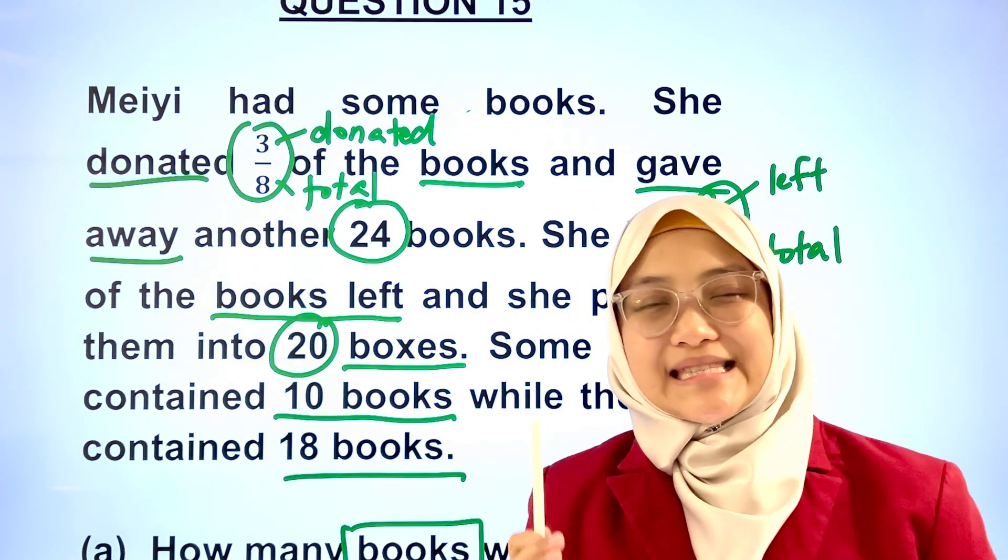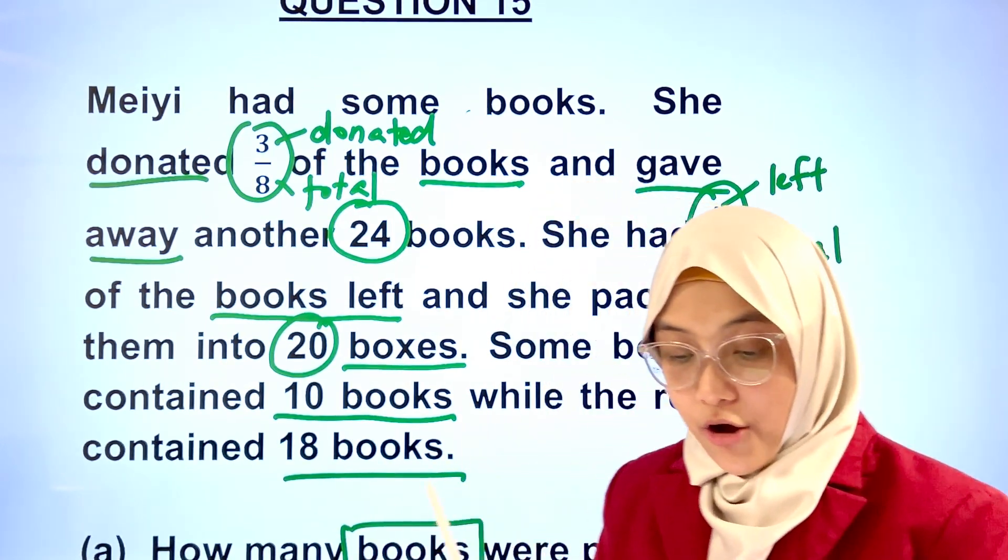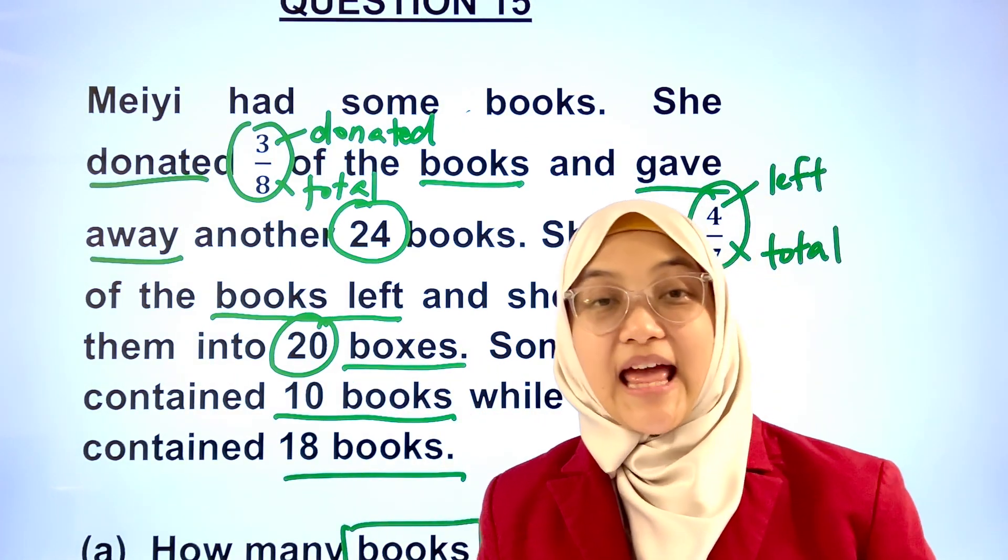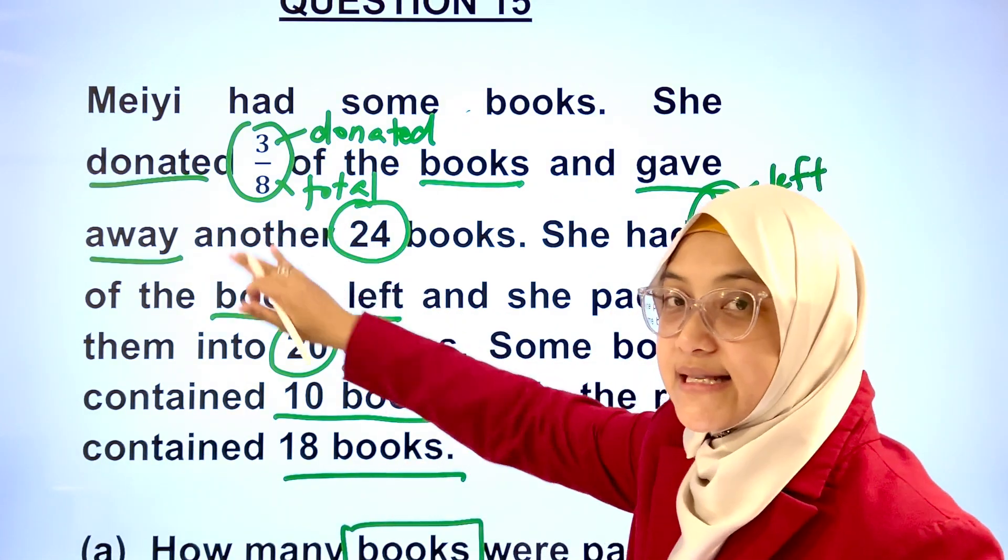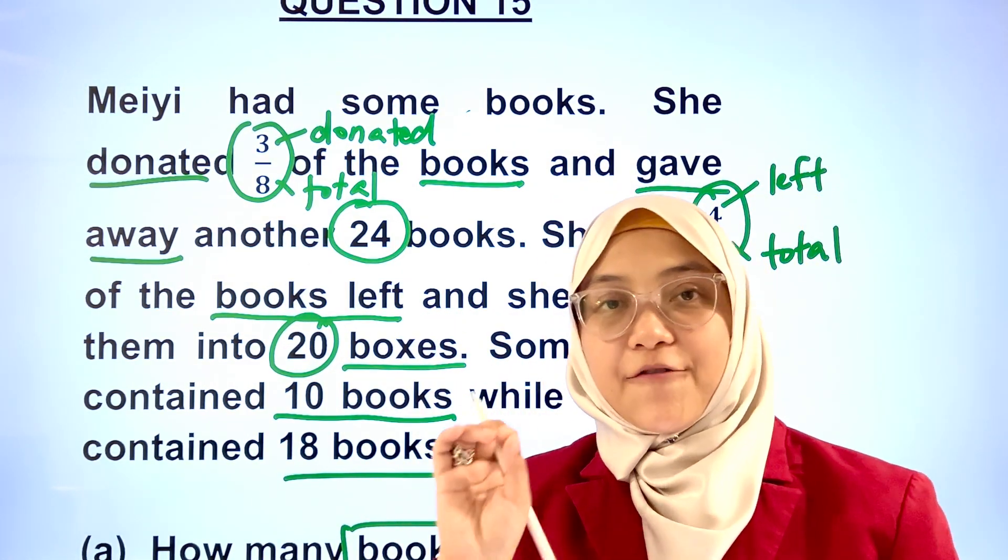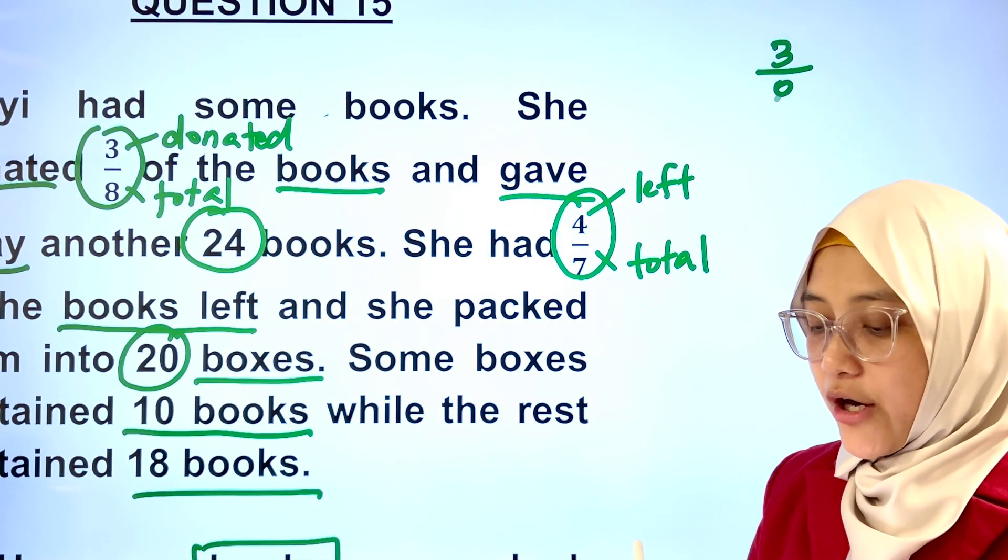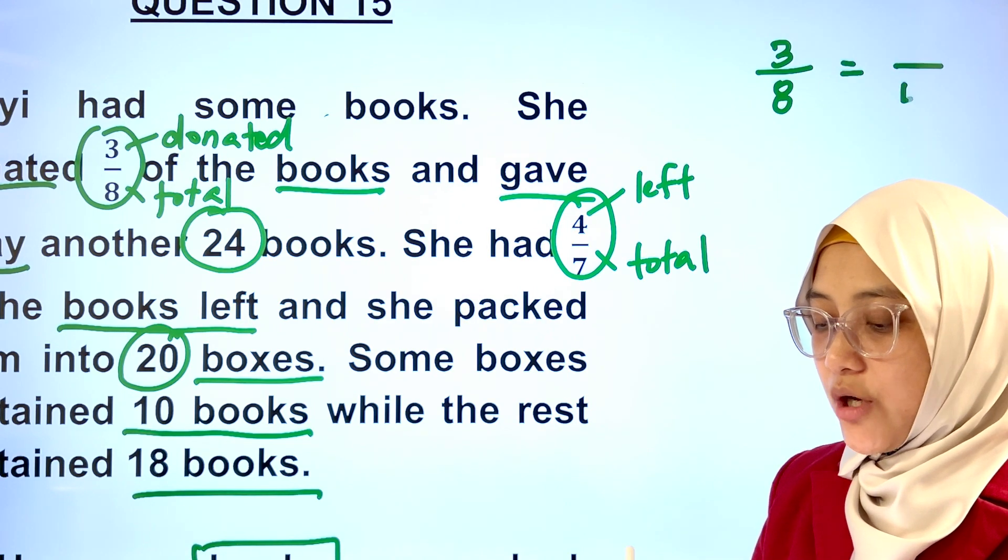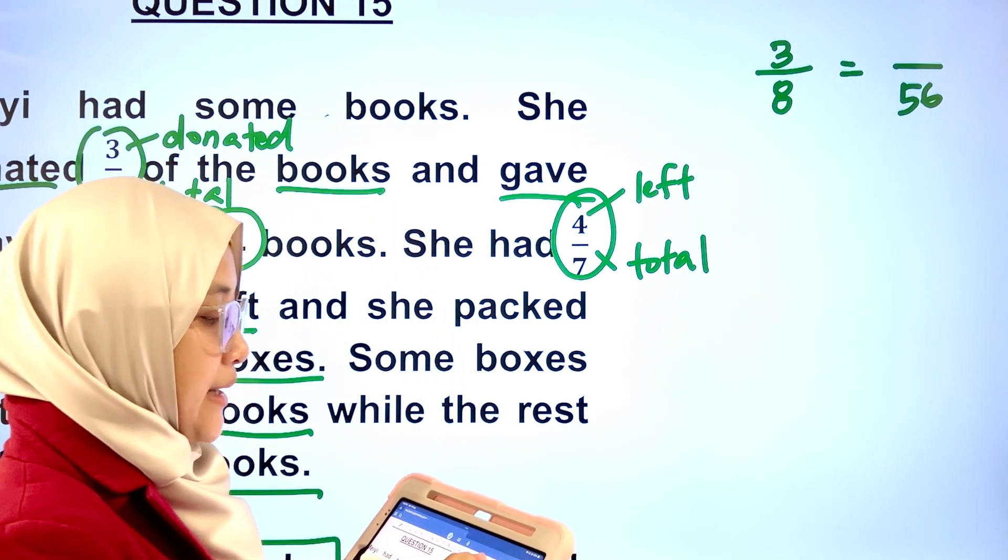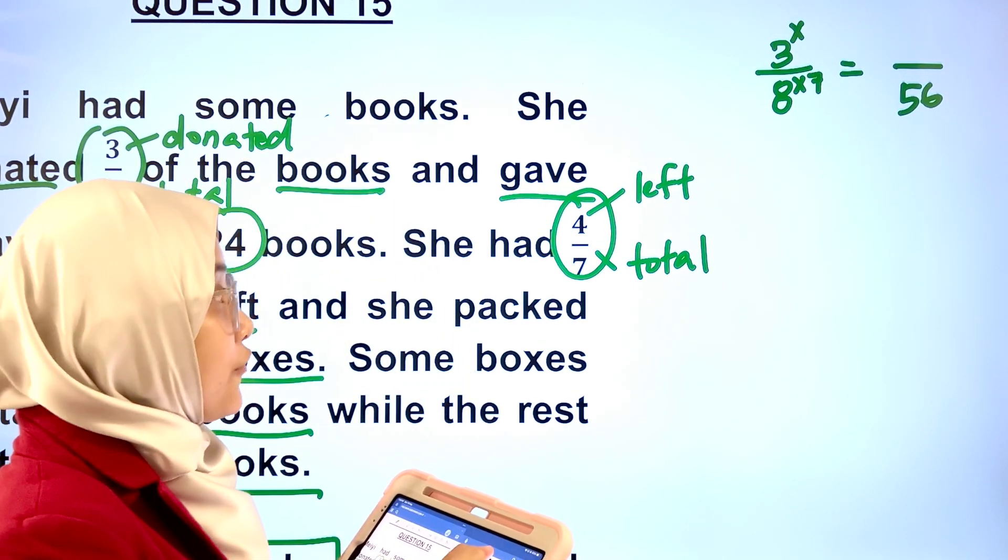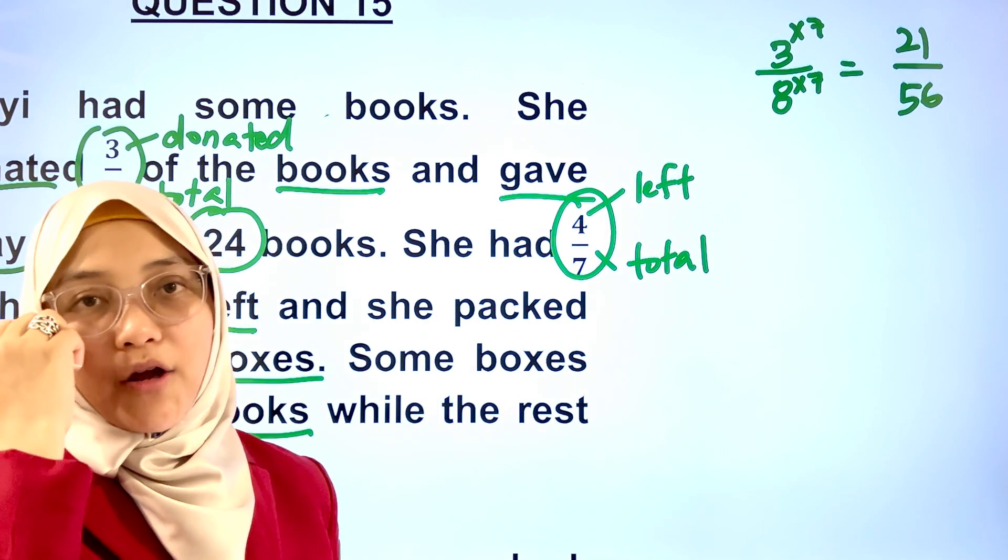This question is testing on finding the lowest common multiple, or the first common multiple, of 7 and 8, and that is 56. We're going to convert 3 out of 8 and 4 out of 7 with denominator 56. Let's do that together. 3 out of 8, if we convert it to a denominator 56, that is multiplication of 7 to both the denominator and numerator. We have 21 out of 56.